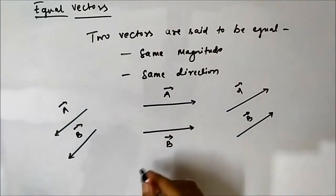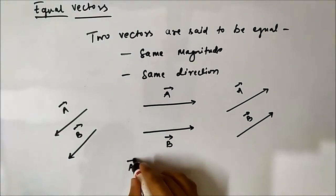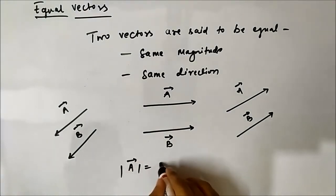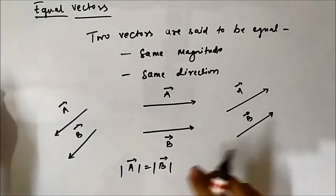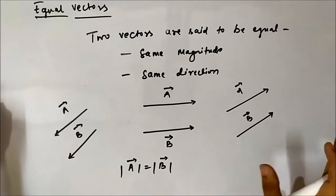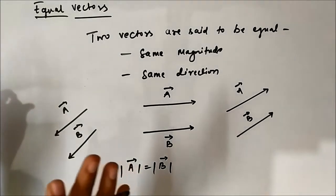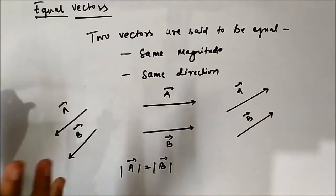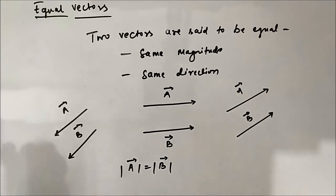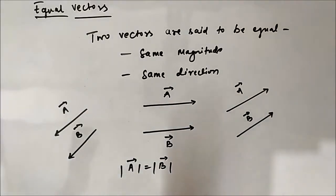In all of these cases the magnitude is the same and the direction is also the same — they are directed in the same direction. So two vectors are equal when they have the same magnitude and direction.